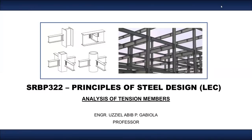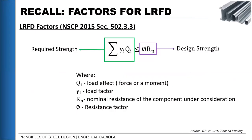Welcome back. For today we will be discussing how to analyze tension members based on the topics discussed so far. As a recall, the requirement for LRFD states that the required strength — the loading the structure will be subjected to — should be less than the design strength, or the capacity of our section. The capacity of our section should be greater than the loadings applied to our structure.